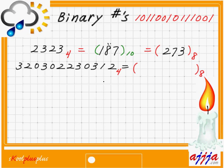Now with a really long base-4 number, converting to decimal would take forever — imagine 100 digits or a thousand digits, it's impossible! That's why I have a trick worth about one million dollars. But before that, I'm going to give you a homework problem. You try it, find the right answer, send it to me, and I'll call you a genius!